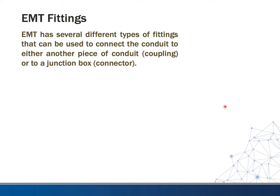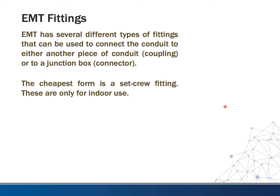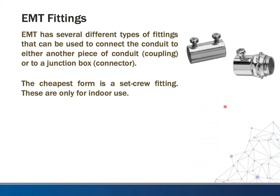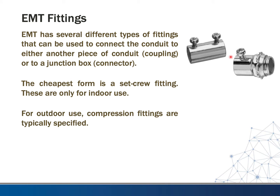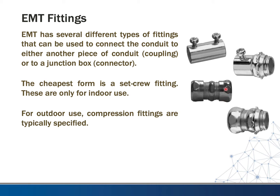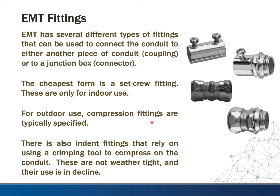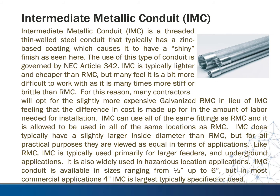EMT has several types of fittings used to connect conduit to another piece of conduit — called a coupling — or to a junction box — called a connector. The cheapest form is a set screw fitting, for indoor use only, identifiable by a prominent set screw. For outdoor use, compression fittings are typically specified; the tapered threaded portions compress tighter as you screw down, creating a liquid-tight connection. There is also an indent fitting that uses a crimp tool to compress onto the conduit with two indents to hold it in place. Indent fittings are not weather-tight and their use is in decline because the connection is not always reliable.